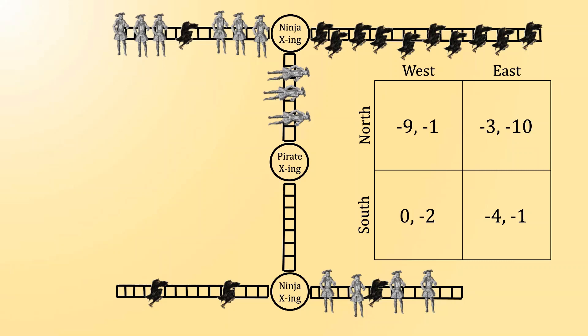If we let q be the probability that the ninja plays west, and 1-q be the probability that the ninja plays east, then the pirate's payoffs are going to be, for north, q times negative 9, plus 1-q times negative 3, and for south, q times 0, plus 1-q times negative 4.